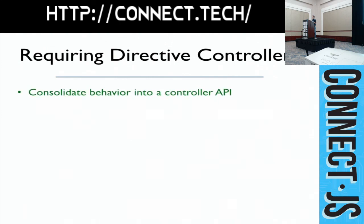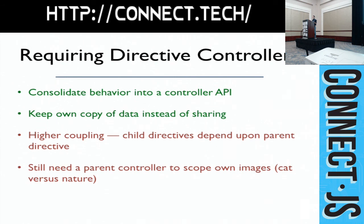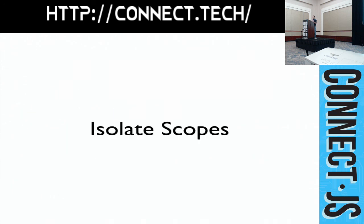Pros and cons of requiring directive controllers: we were able to consolidate behavior — putting functionality into the parent controller — and keep data private without sharing it across image galleries, so mutating data no longer affects each other. But this did create higher coupling: child directives now expect a certain parent with certain functions available. And we still have the issue of needing a parent controller to supply the images. We'll alleviate some of these issues with isolate scopes.